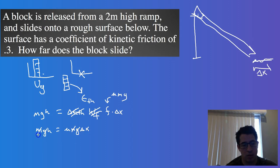And these two will drop out. And so H would be equal to mu times delta X. So if we divide 2 by 0.3, we get that delta X would be equal to about 6.7 meters.